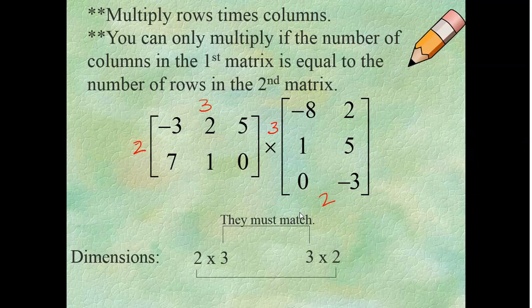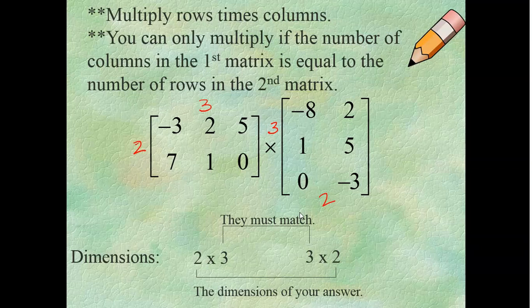The other two numbers on the outside, that's going to be the dimensions of your answer. So, if I multiply these two together, I would get a 2 by 2 matrix. Kind of silly, but bear with me. Let's try a few problems.